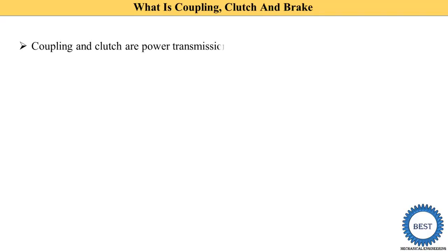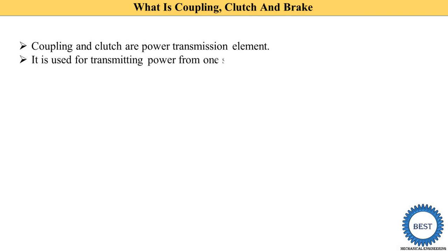Coupling and clutch are power transmission elements. They are used to transmit mechanical power — specifically, rotational energy from one shaft to another shaft.